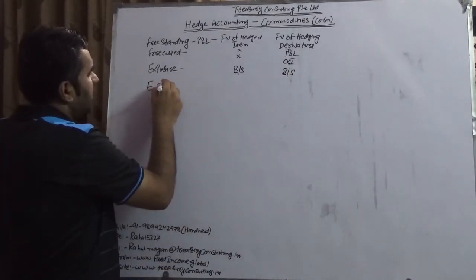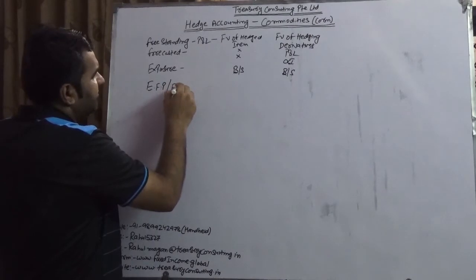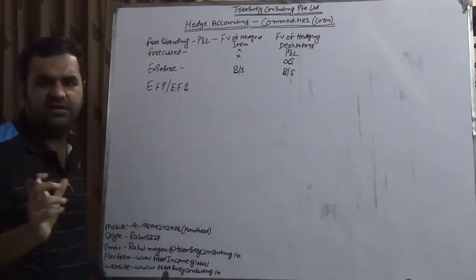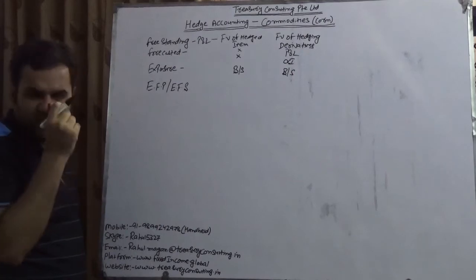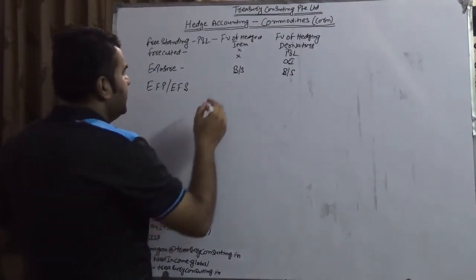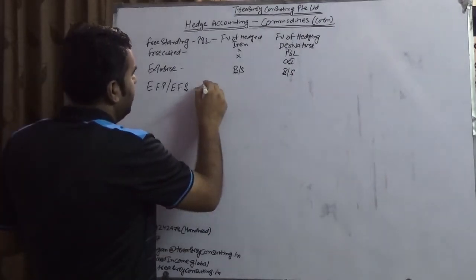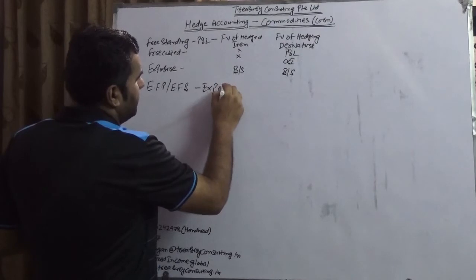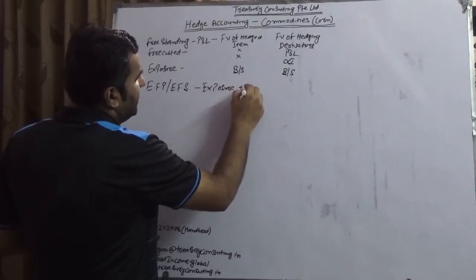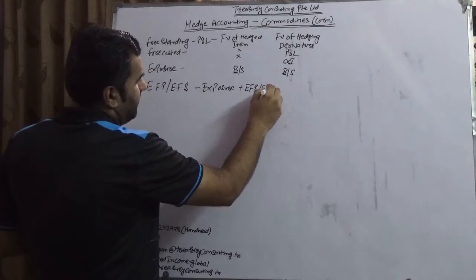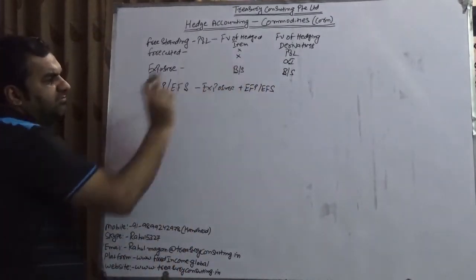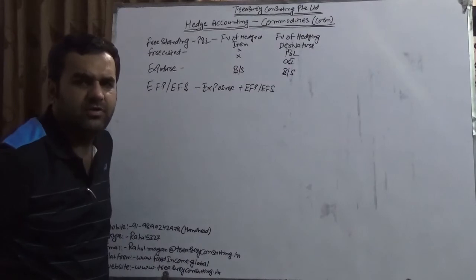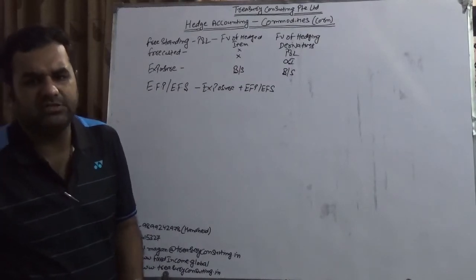In the case of direct exposure — like Nestle, which has been consuming a known quantity for many years — the fair value of the hedged item will hit the balance sheet, provided it is effective in nature. Fourth is Exchange for Physicals or Exchange for Swaps, which is technically the sum of exposure plus the exchange for physical or exchange for swap.